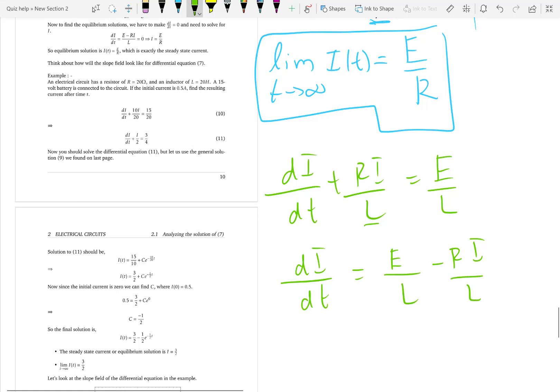Now, to find the equilibrium solution, we make it equal to zero. That means equilibrium solution means the solution should not change. Slopes are zero. Rate of change is zero. So the current will not change. Ideally, that should be the steady state. We discussed this in Newton's law.